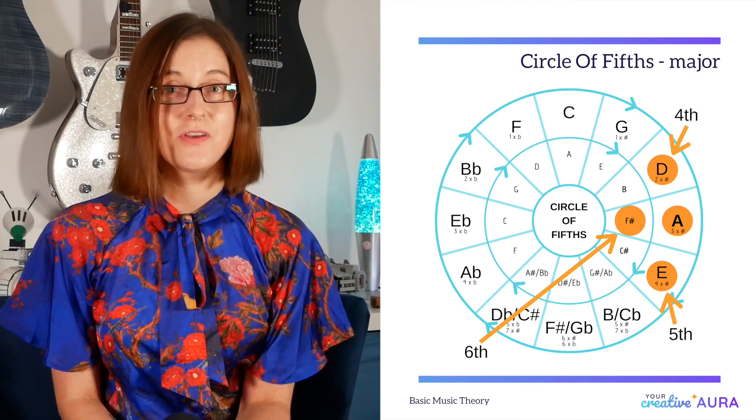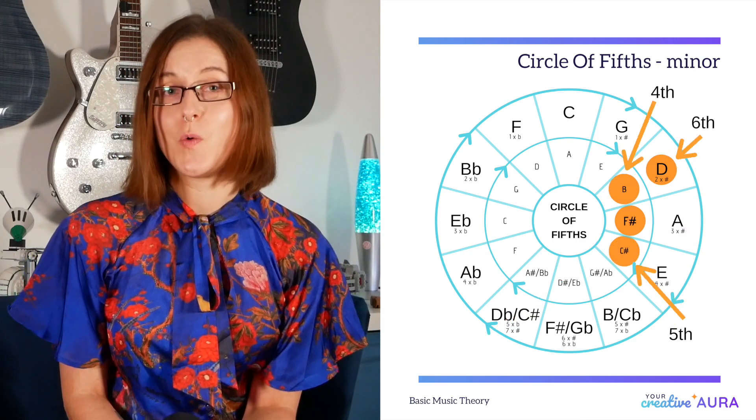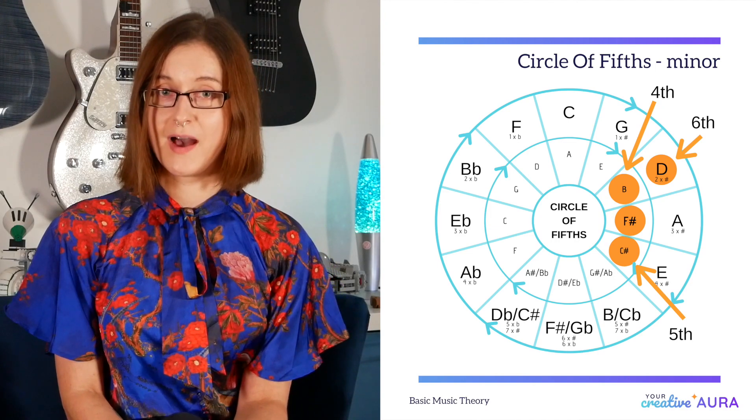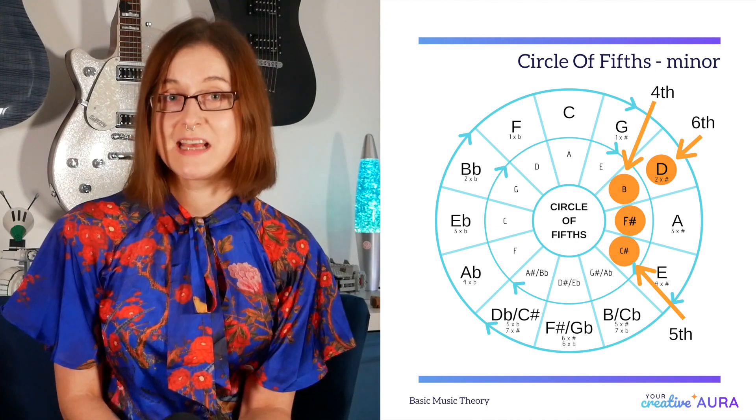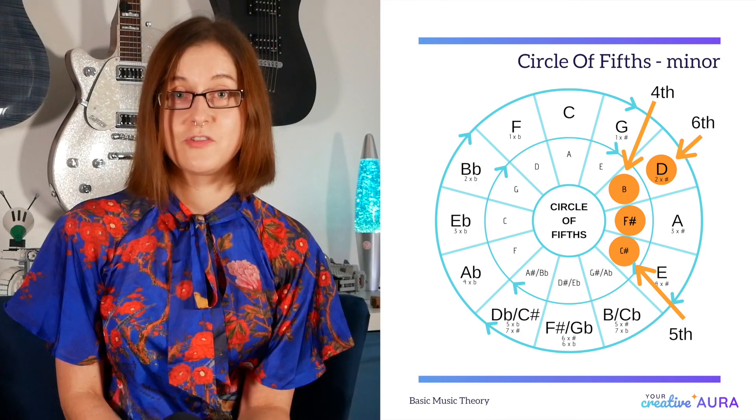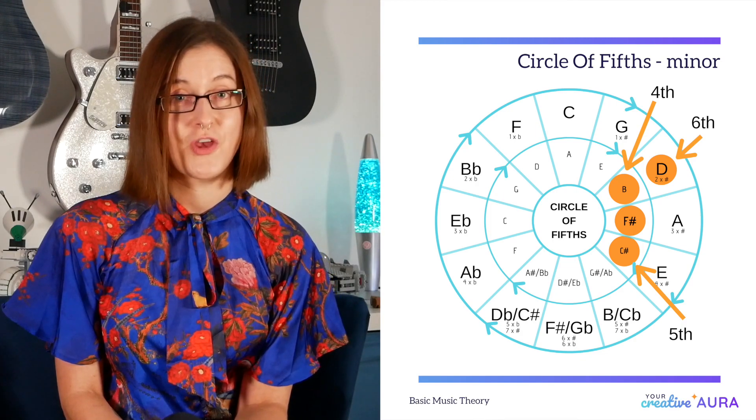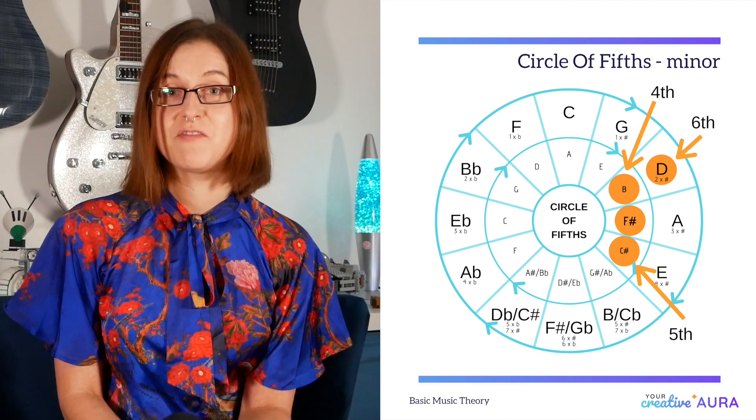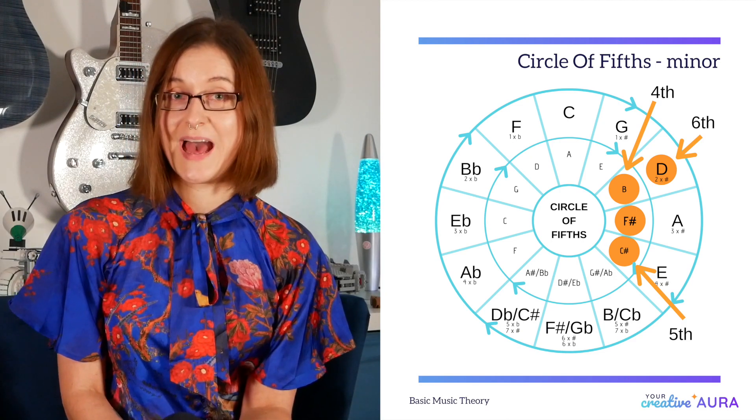For minor scales, we have our fifth chord also in front, our fourth chord is also behind. However, our sixth chord is the opposite to the fourth chord on the outer circle. So for F sharp minor, we have B, C sharp and D.